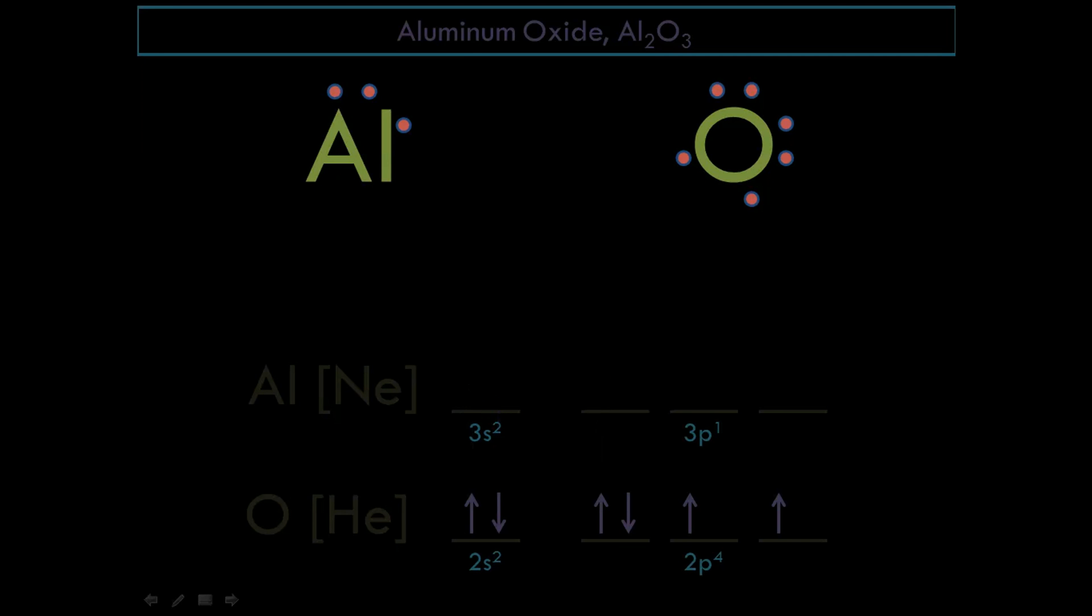Losing it, it will become like neon. Now, oxygen, if oxygen gains 2 electrons, if these 2 electrons will become paired, it will become like the noble gas following it. What is the next noble gas after oxygen? That is neon. Both will become like neon, if that happens.